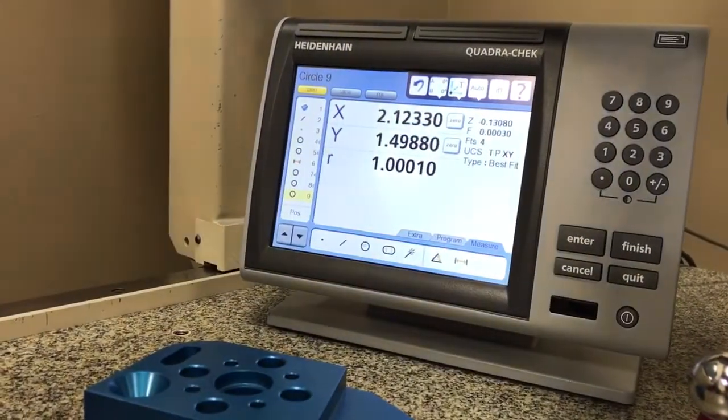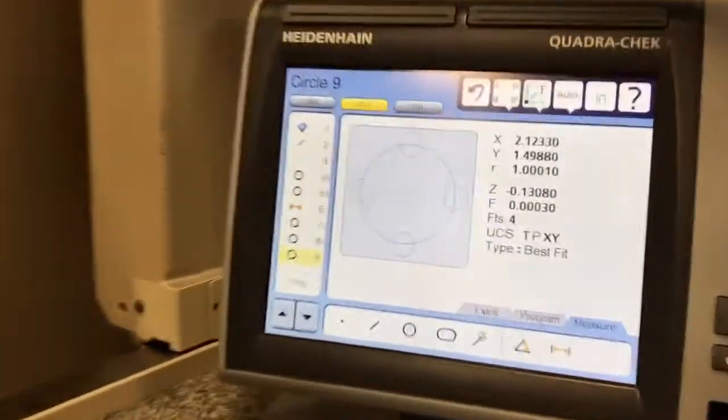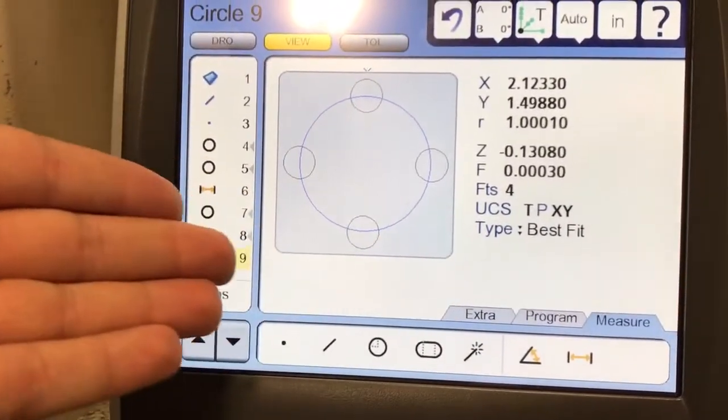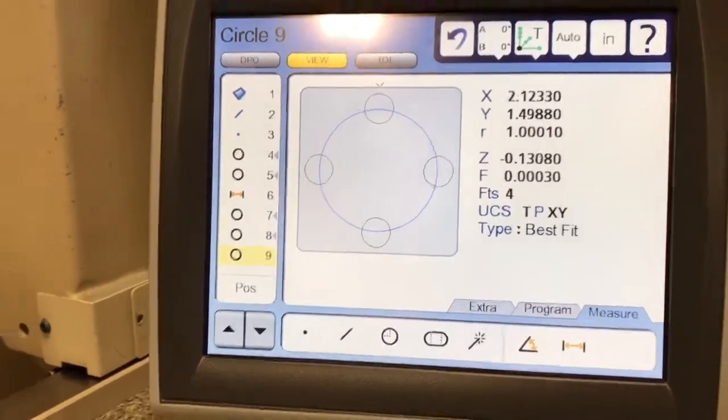Press finish. Now if you want to see what you just did, you can press on this view button right here, and you can clearly see the circle that you just made within those four circles that you previously just made. So that's a really cool feature.